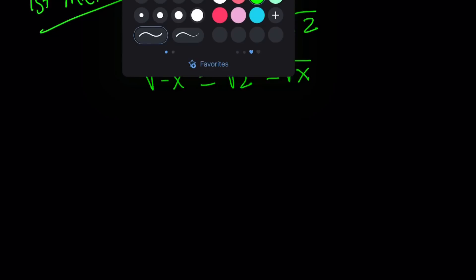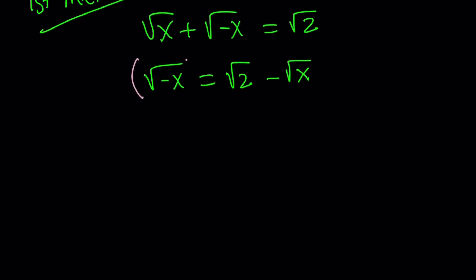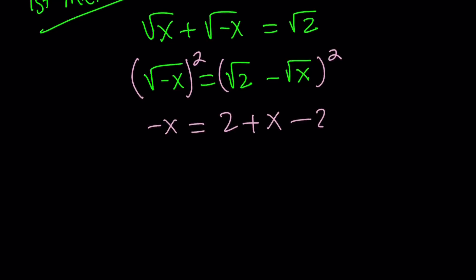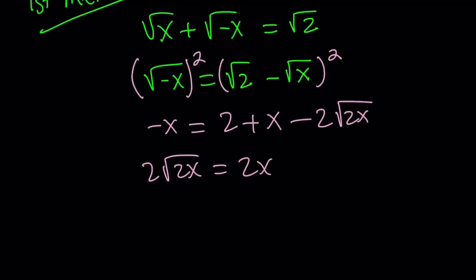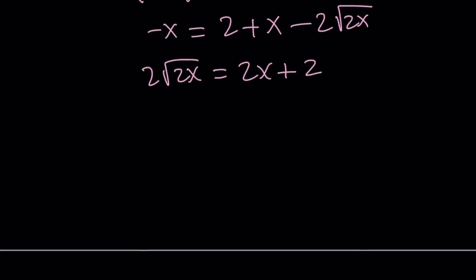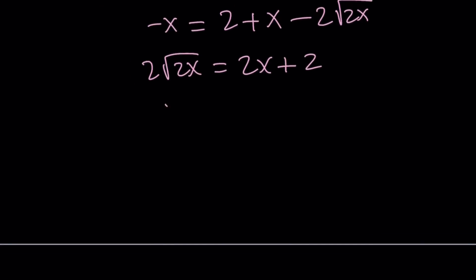Let's go ahead and square both sides. That gives us negative x equals 2 plus x minus 2 times the square root of 2x. Let's isolate 2 times the square root of 2x, putting everything else on the right hand side, giving us 2x plus 2. Dividing both sides by 2 gives us square root of 2x equals x plus 1.